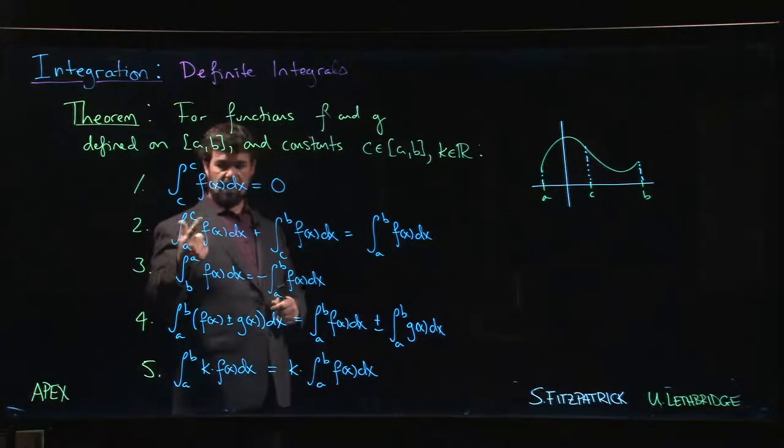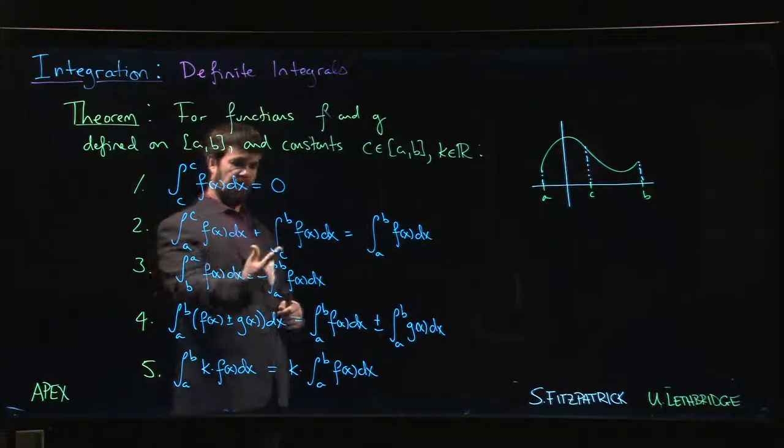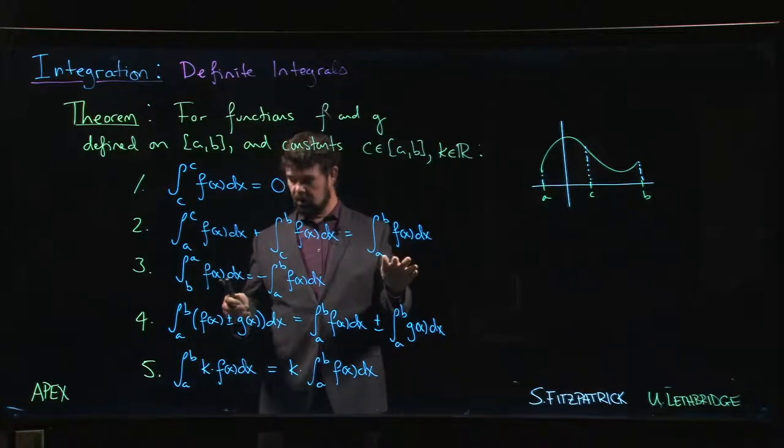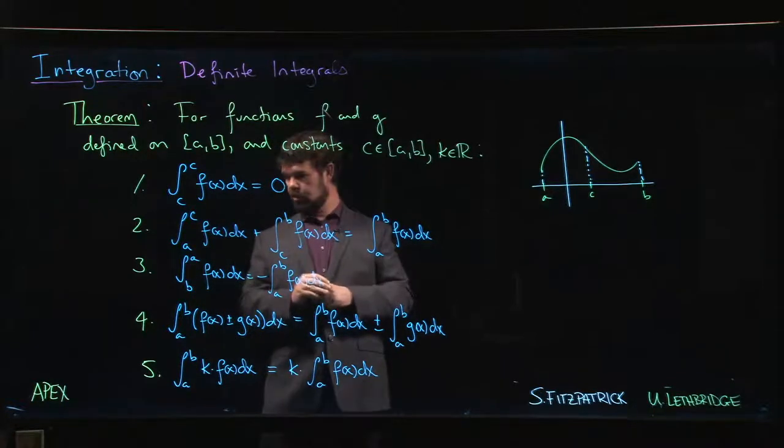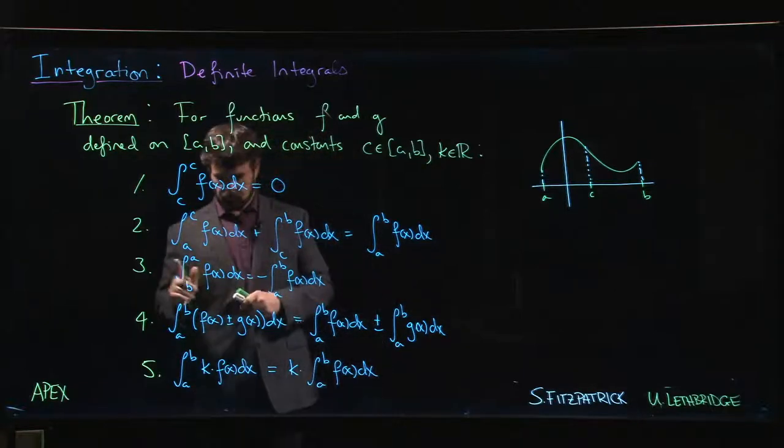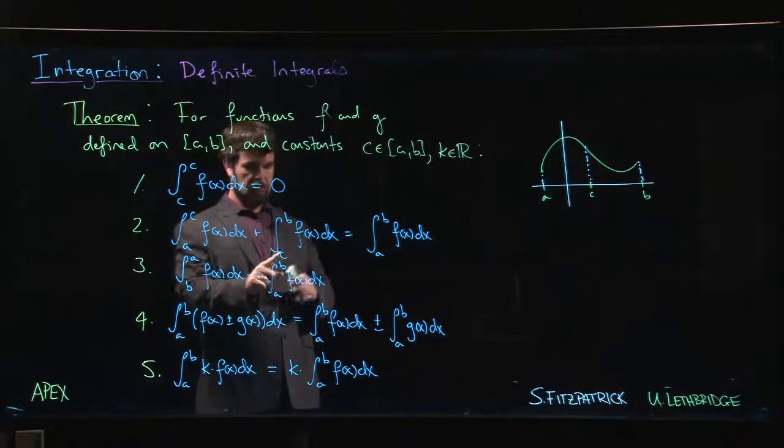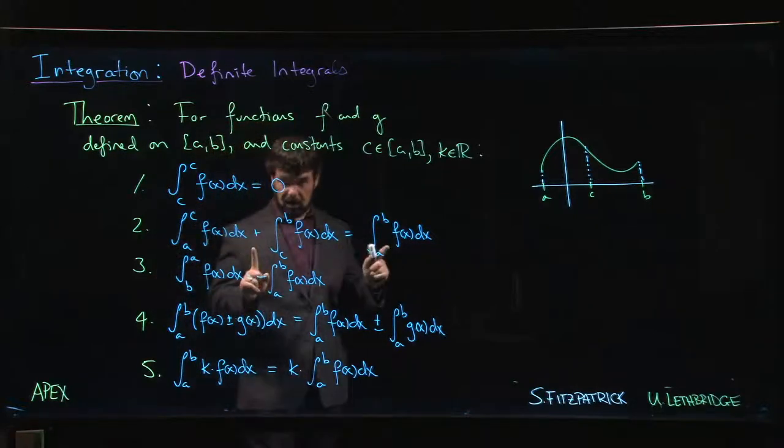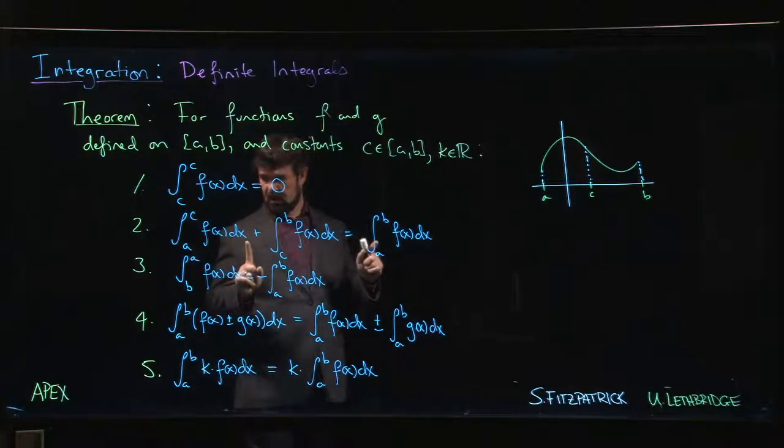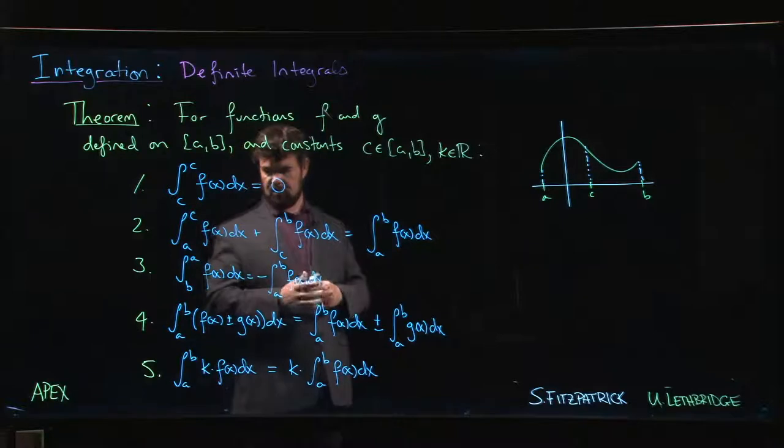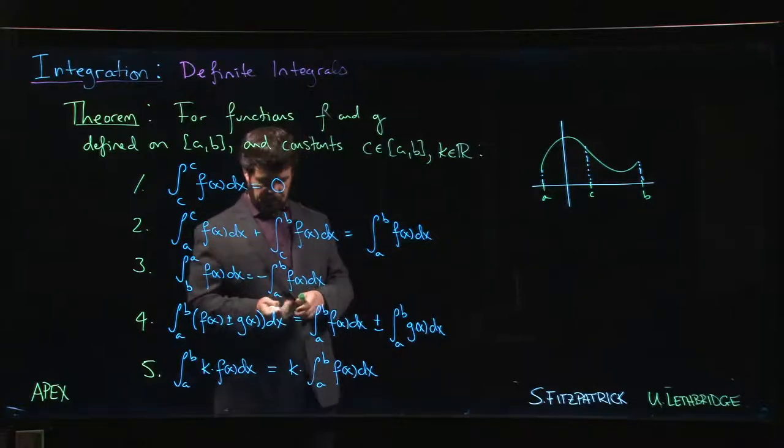If you put c equal to a, you would have the integral from a to a of f(x) dx plus the integral from a to b. Actually, that one is not going to quite work. How do we want to do this? We probably want to do a to b. Maybe c equals b? No, doesn't quite work there. We'll sort this one out though.